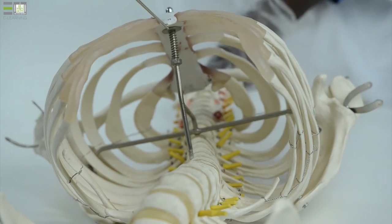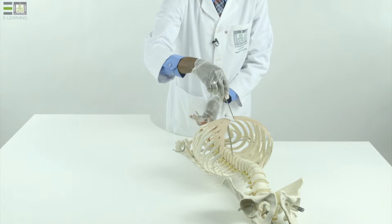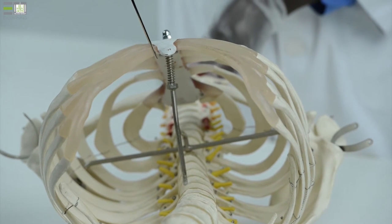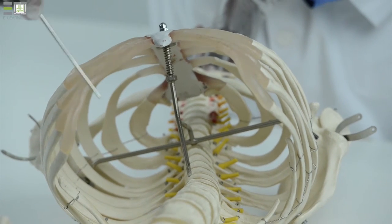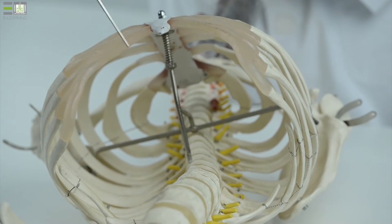This is bounded anteriorly by the lower edge of the xiphoid process, by the costal margin, which is formed by the fibrous costal cartilages of the lower ribs.